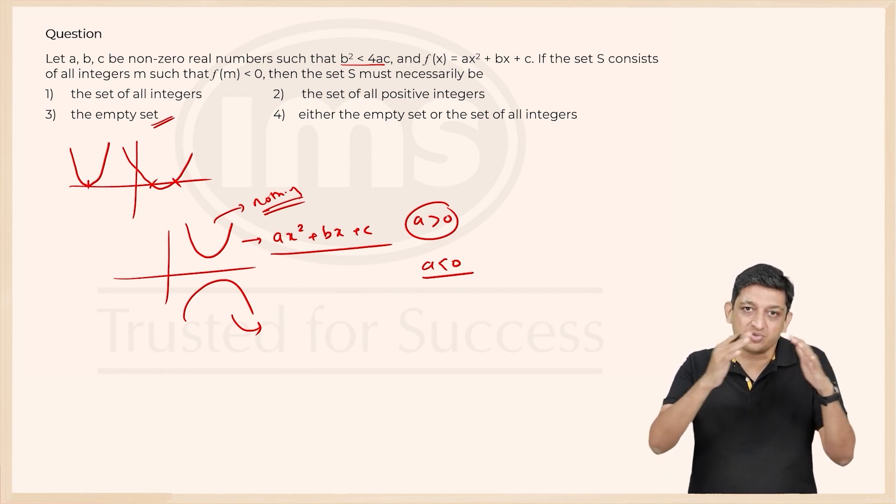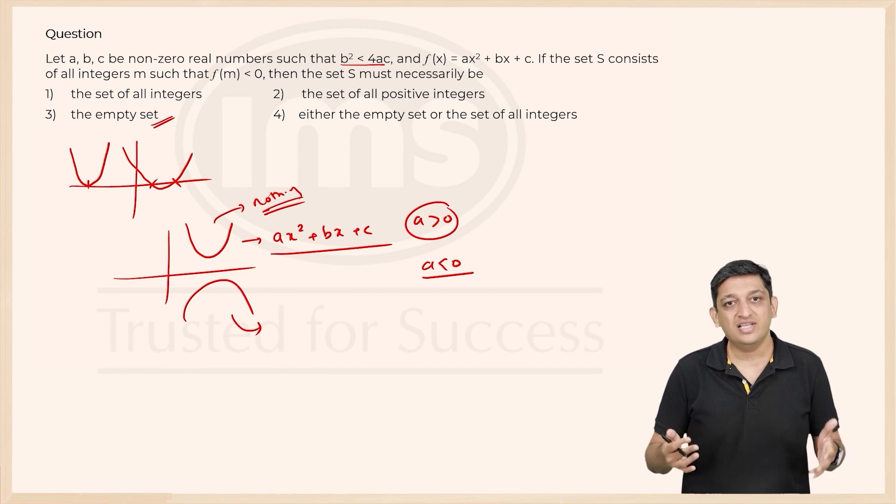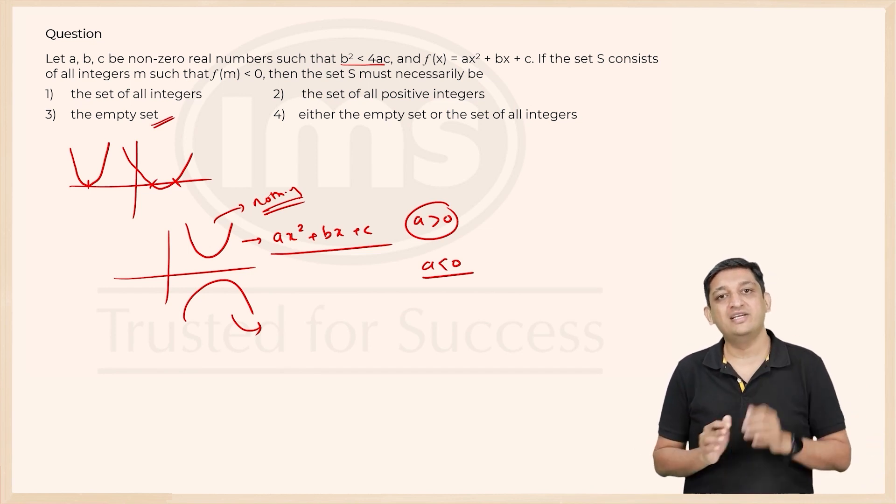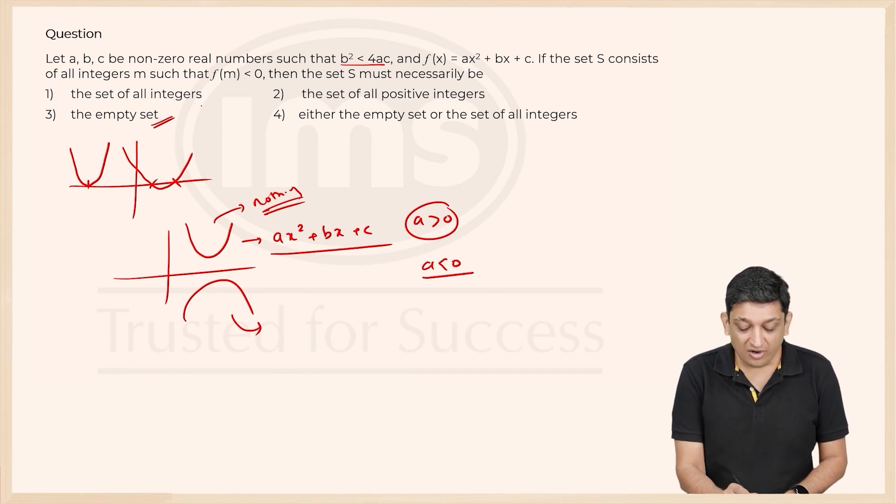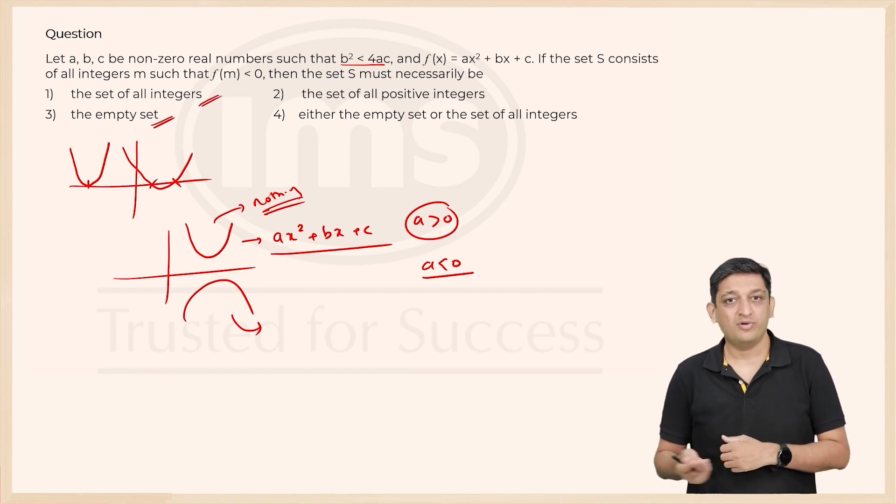So because this curve is always going to stay below the x-axis and it goes on till infinity, we know that it will comprise of all possible integers that exist. So the empty set is also possible, all set of integers is also possible.